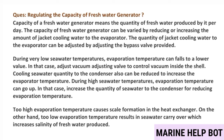During very low sea water temperatures, evaporation temperature can fall; in that case, adjust the vacuum-adjusting valve to control vacuum inside the shell, and reduce cooling sea water quantity to the condenser to increase evaporation temperature. During high sea water temperatures, evaporation temperature goes up; increase the quantity of sea water to the condenser to reduce evaporation temperature. Too high evaporation temperature causes scale formation; too low results in sea water carryover, increasing salinity.